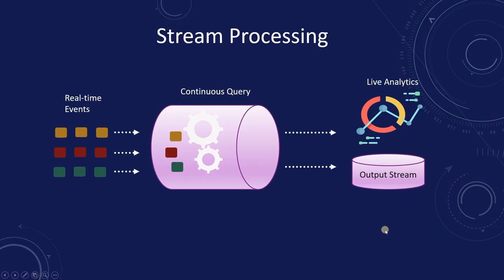When coupled with platforms such as Apache Kafka, Apache Flink, or AWS Kinesis, stream processing quickly generates key insights so teams can make decisions quickly and efficiently. Stream processing is also primed for non-stop data sources, along with fraud detection.